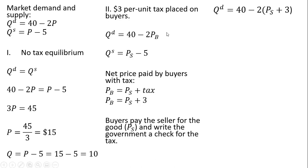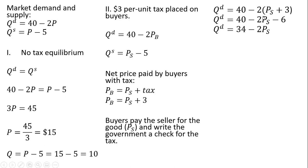What I'm going to do is take my quantity demanded equation — this demand equation — and substitute out P subscript B for P subscript S plus 3. An important point here is that this minus 2 is being multiplied entirely through this P subscript S plus 3. So simplifying the right-hand side, minus 2 times 3 is minus 6, and 40 minus 6 leaves us with our demand equation in the face of taxes, equal to 34 minus 2 times the price that sellers receive.